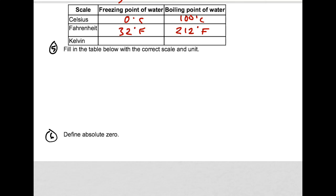So the freezing point of water is 273 Kelvins, and then the boiling point is 373 Kelvins. It's just a difference of 100, just like in Celsius. So, there you go. Fill in the table with the correct scale in units. Done.